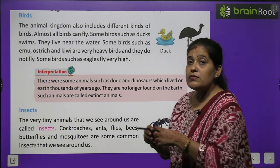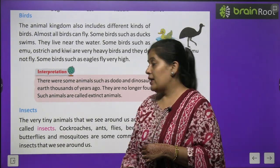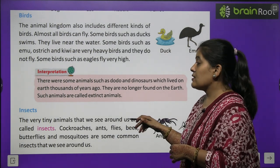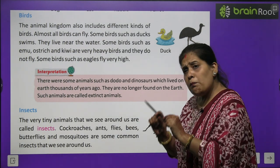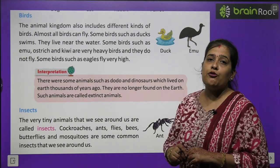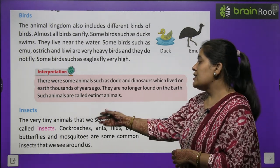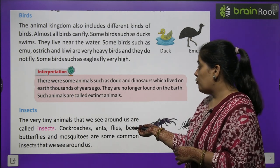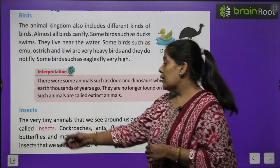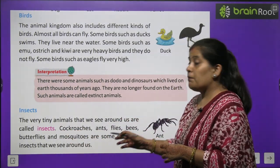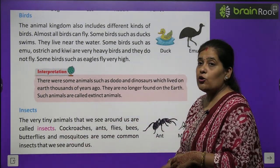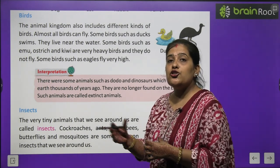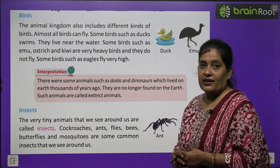Now we will learn about insects. They are very tiny creatures that we can see around us. Very small creatures we see around us are called insects. Cockroach, fly, bee, makhi, madhu-makhi, butterfly and mosquito — these are common insects. Butterflies are called titli. These are all insects that we see around us.